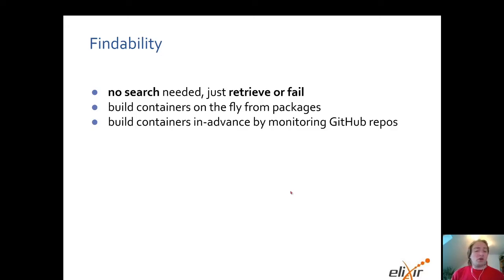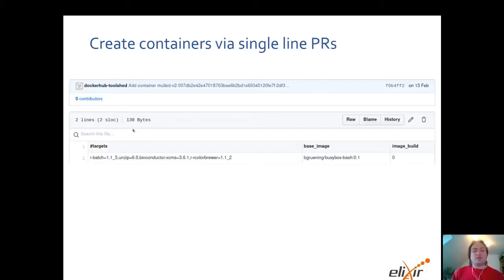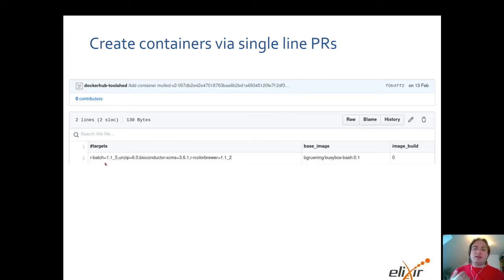You can build containers from packages, or build them a priori before running your workflow. For example, you can monitor GitHub repositories for workflows and build containers based on the package requirements of a specific workflow. We also offer the community a GitHub repository where you just add a file specifying your targets and optionally a build image. Once that pull request is merged, the container is automatically created and every workflow engine can fetch it down using the hashed name.